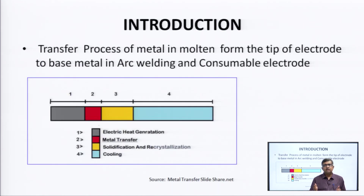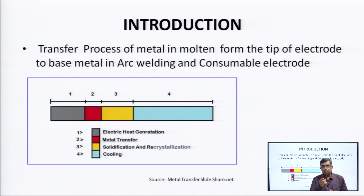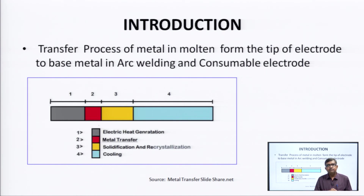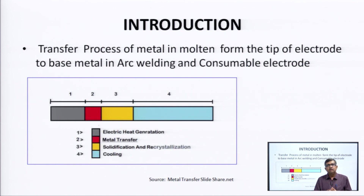The transfer of metal in molten form from the tip of the electrode takes very little time to leave the electrode tip and reach the molten weld pool. Due to the arc, electric heat generation takes place in less than one second. After that, metal transfer occurs; when the heat is very high, solidification and recrystallization of the molten droplets that have landed into the weld pool take place, followed by cooling.